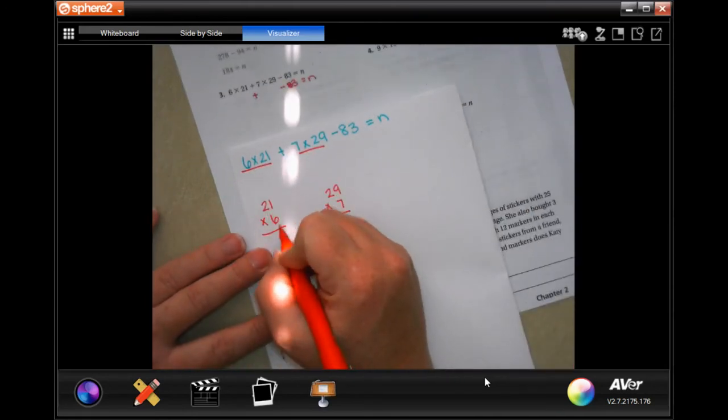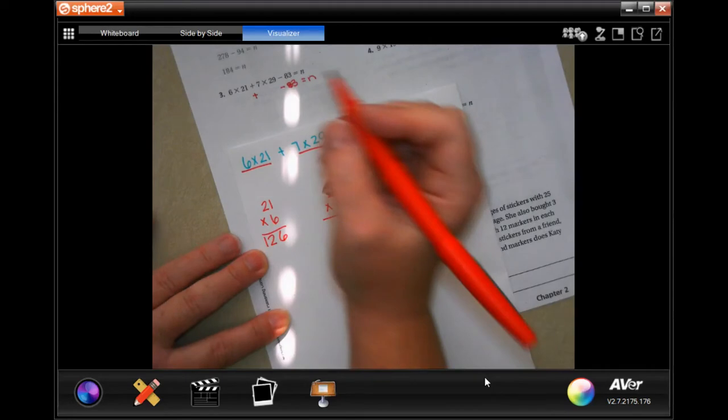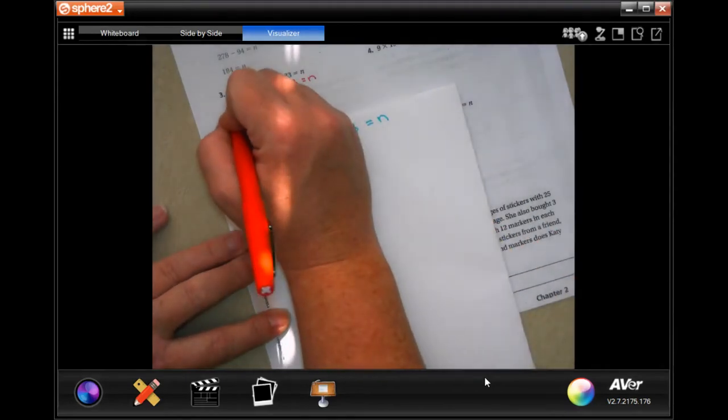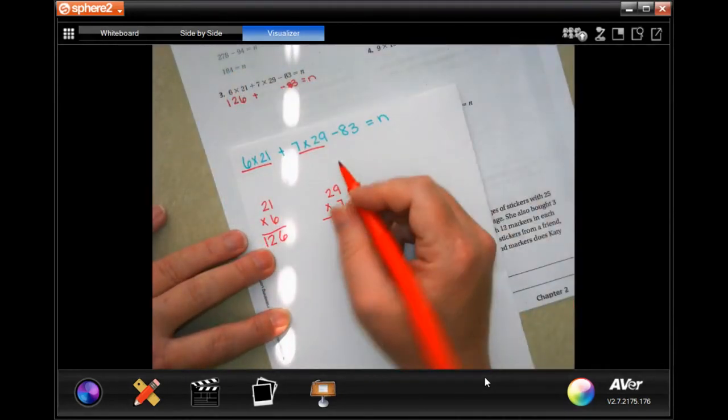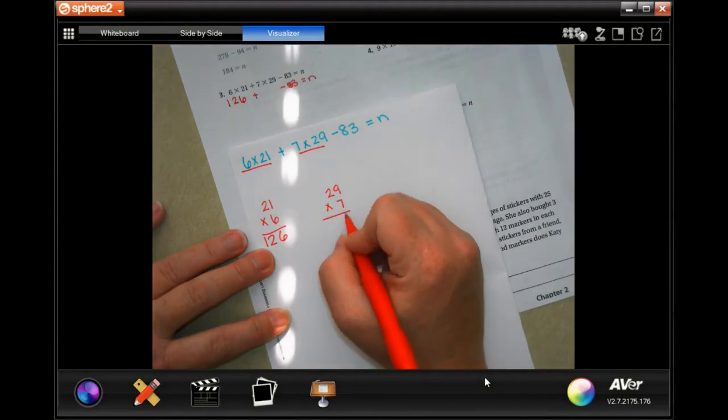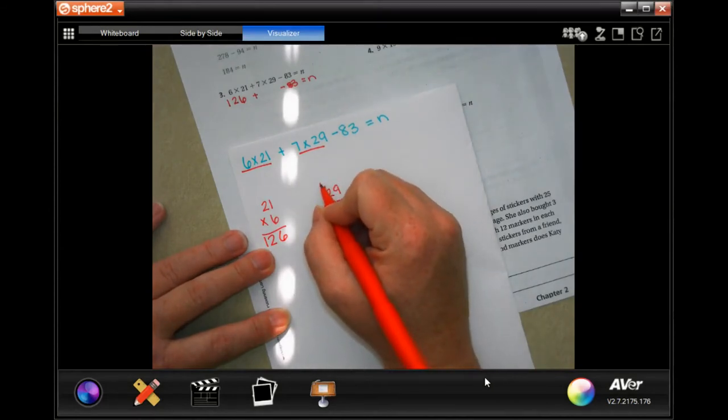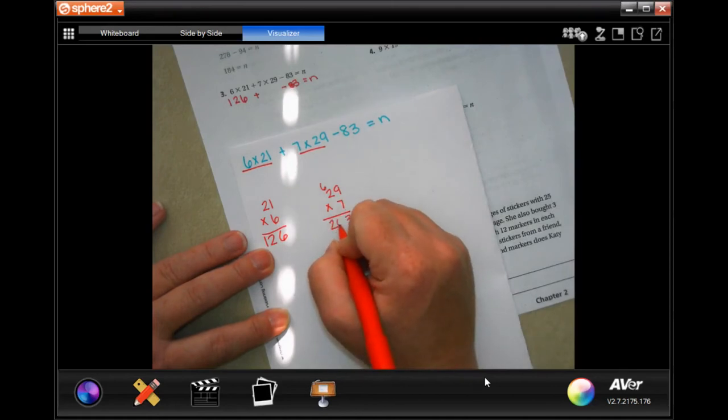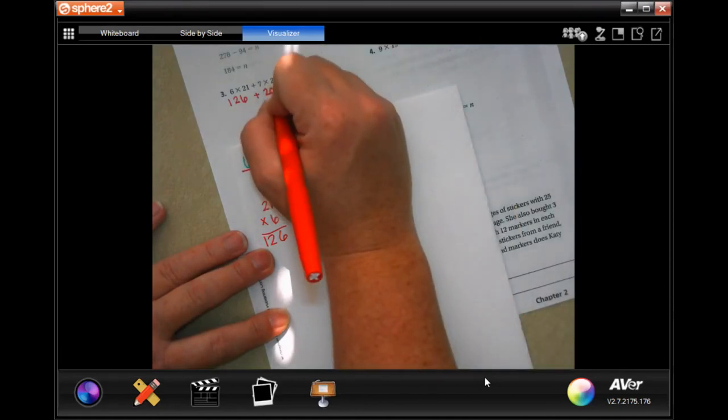So 6 times 1, 6, 6 times 2, 12. So 126 there. 7 times 9, 63, carrying my 6, 6 times 2 is 14 plus 6, 20. So 203.